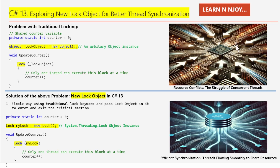If you look at the image on the right-hand side, it depicts multiple computer threads trying to access the same resources — like a database or chip — all at once. The lines represent threads converging on shared resources, creating congestion or conflict. It highlights the typical problems developers face when managing thread contention in multi-threaded programming. Imagine multiple threads trying to access the same resources all at once — this can create congestion and conflict. That's where the new lock object comes to the rescue.